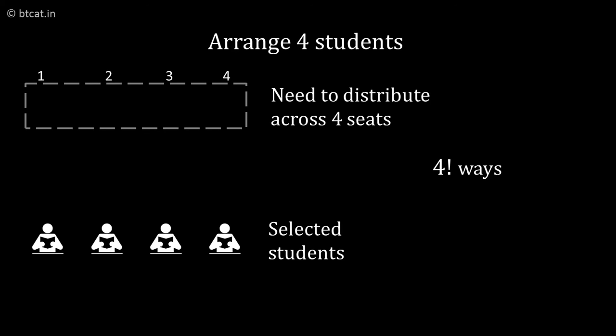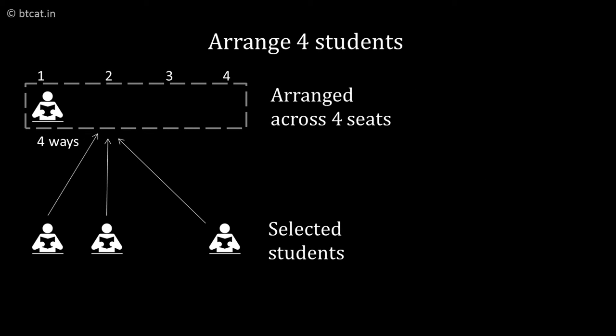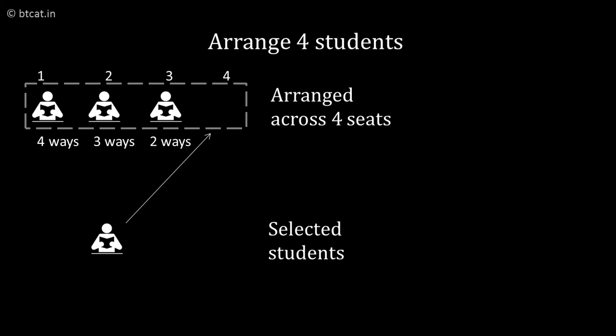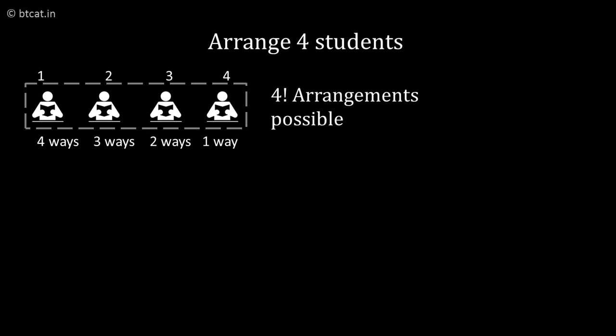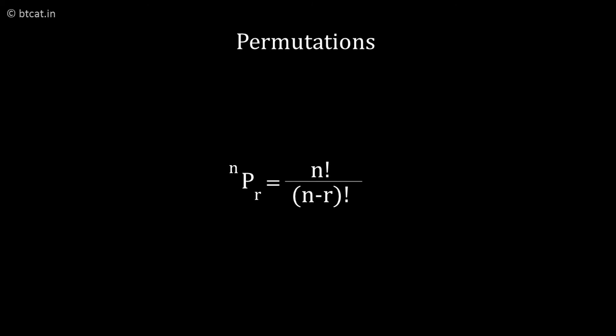First we are selecting those 4 students, and now we are arranging these 4 among themselves, which can be done in an extra 4 factorial ways. The first place can come in 4 ways, the second in 3 ways, then 2 ways and 1 way. So 4 into 3 into 2 into 1 is nothing but 4 factorial.